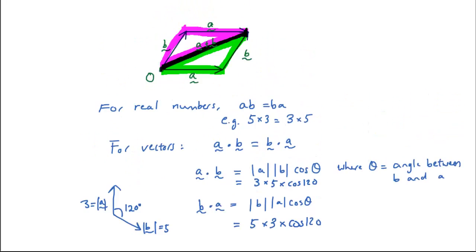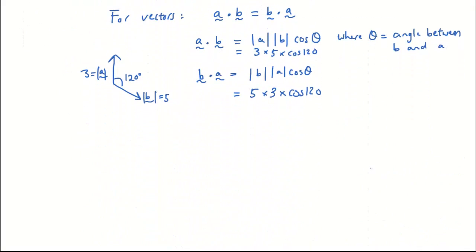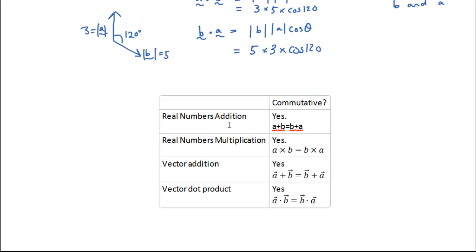This video we're just going to do the commutative law, and then we'll get to the other laws later. I've typed a summary table: the commutative law is true for real numbers — a plus b equals b plus a, and a times b equals b times a. Vector addition is also commutative, so vector a plus vector b equals vector b plus vector a. And the vector dot product is also commutative, so a dot b is the same as vector b dot vector a. Thanks for watching guys, see you next time.